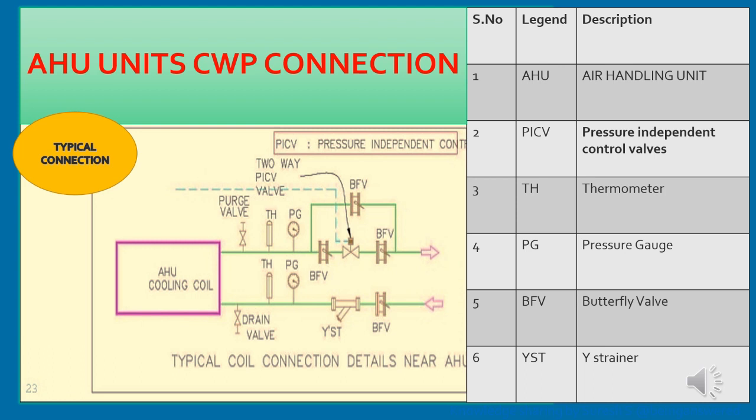Any dust particles or waste material will get collected in the strainer before reaching the coil, protecting the coil. Any sharp edges getting into the coil might damage it — that is the reason the strainer is used. Even though it is a closed circuit, as the chiller keeps running day by day, particles inside the pipe should not damage the coil. The accumulated dust material in the strainer will be removed periodically, and a butterfly valve will also be used.